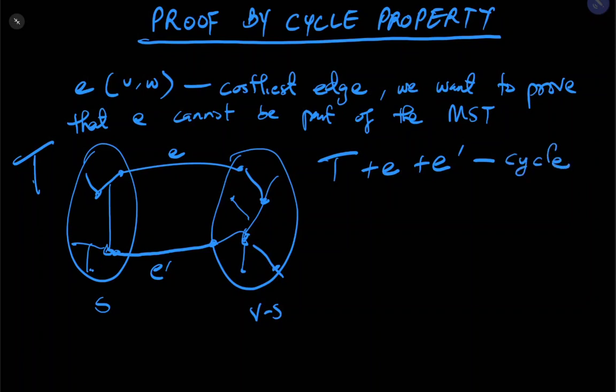And to make it a minimum spanning tree, we want to remove the costliest edge. And since E is the costliest edge, we have only T and E prime remaining. So at that point when we remove just E, we want to have T and E prime remaining. And T and E prime becomes a minimum spanning tree.